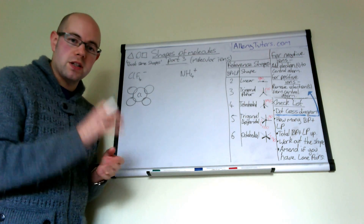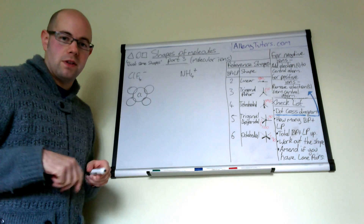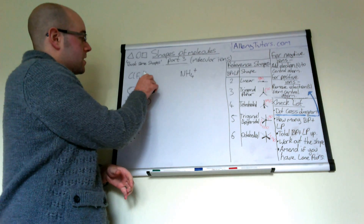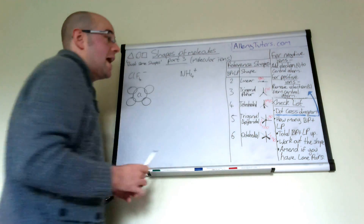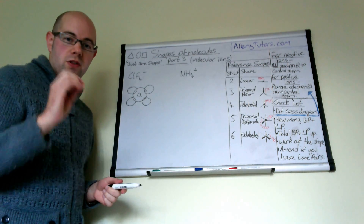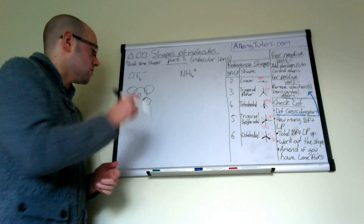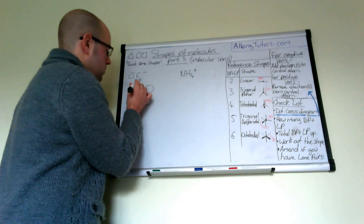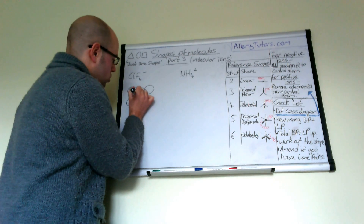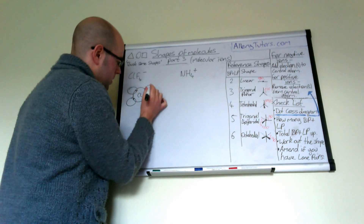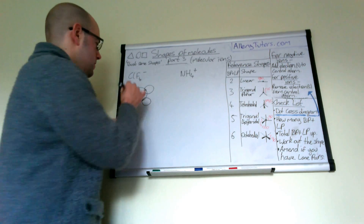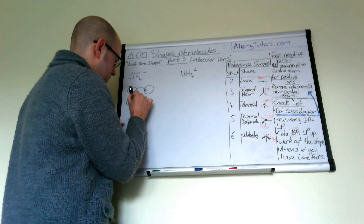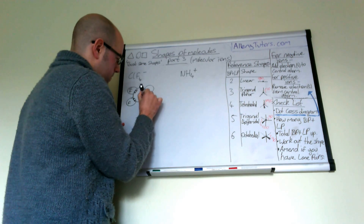Chlorine is in group seven, so it normally has seven electrons in its outer shell, but because we've got a negative charge we've got to add an electron first to the central atom. So chlorine is the central atom because we've got four fluorines coming from it. Chlorine is sharing four of its electrons with fluorine, so we'll put those on there. There are our fluorines.